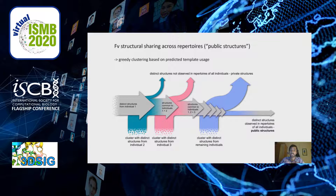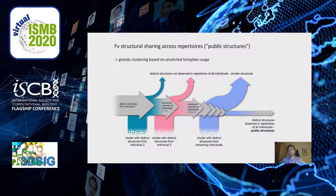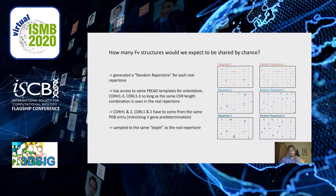We were interested in how many distinct structures were common across different repertoires, so we applied a greedy clustering approach based on predicted templates. Starting with 209,000 distinct structures from our most diverse individual, we considered each subsequent individual in order of diversity. For each new individual, we compared their modelable FVs and associated templates to distinct structures already identified. If an FV was sufficiently close in predicted structure space to something already seen, it was classified as public to both individuals. If it couldn't be assigned, it was classified as a private structure.